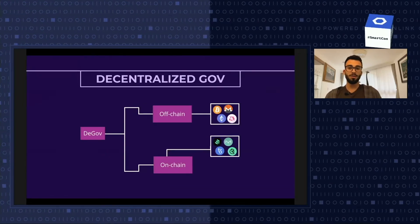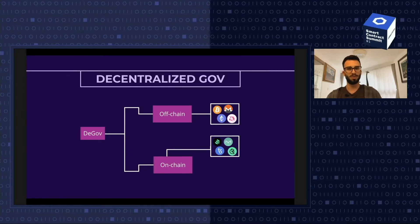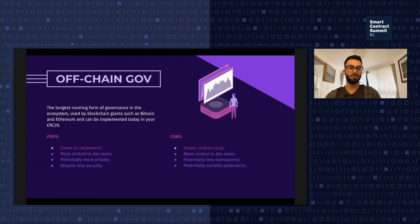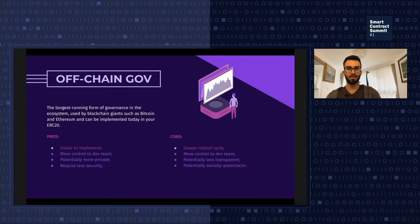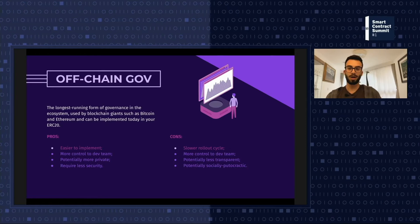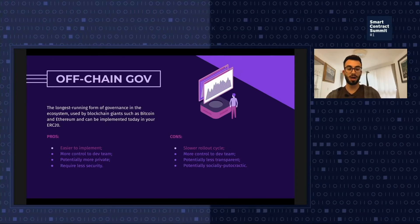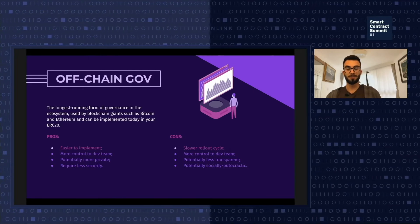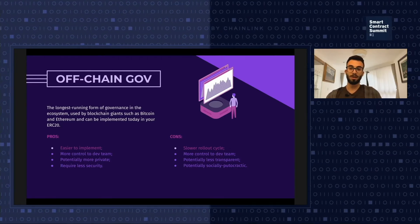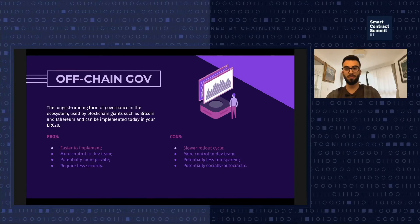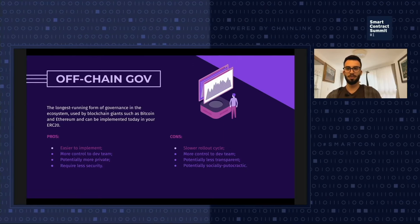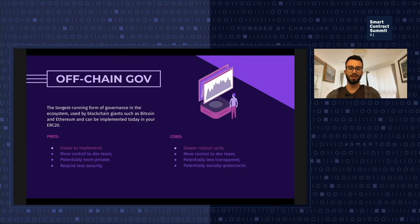We currently have two different forms of governance: off-chain and on-chain. Off-chain governance is the longest-running form in the ecosystem, used by giants such as Bitcoin and Ethereum. It can be implemented today with any ERC20-compliant token, so it's pretty accessible. The pros are it's easy to implement, there's more control for the dev team, it's potentially more private since it's happening off-chain, and it requires less security since it's not directly interacting with protocol functions.